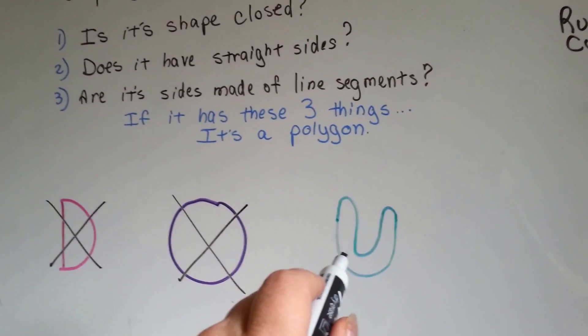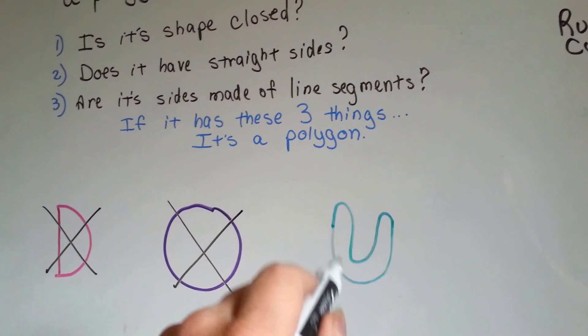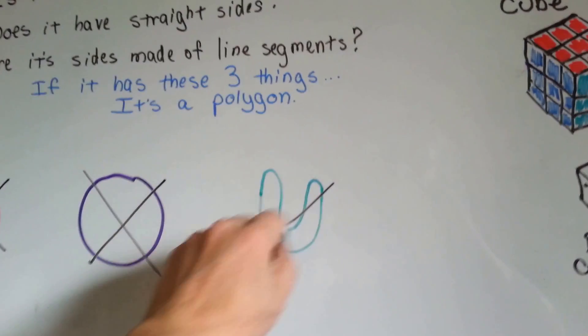How about this curvy shape here? Is it closed? Yes. Does it have straight sides? Nope. Not a polygon.